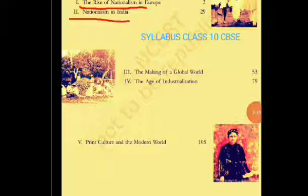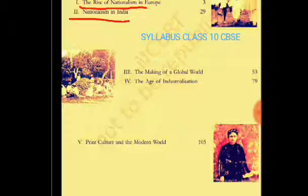Now we will discuss subject-wise. First of all, we will talk about History. There are 5 lessons altogether. The first lesson is 'The Rise of Nationalism in Europe' and the second is 'Nationalism in India' — these two chapters are compulsory. The third and fourth lessons — 'The Making of the Global World' and 'The Age of Industrialization' — are optional.